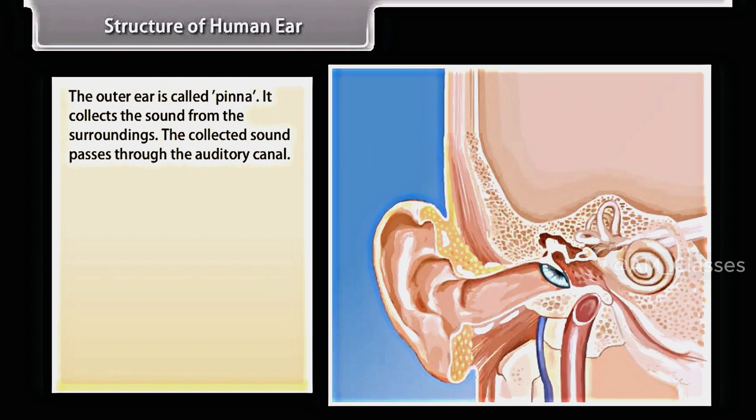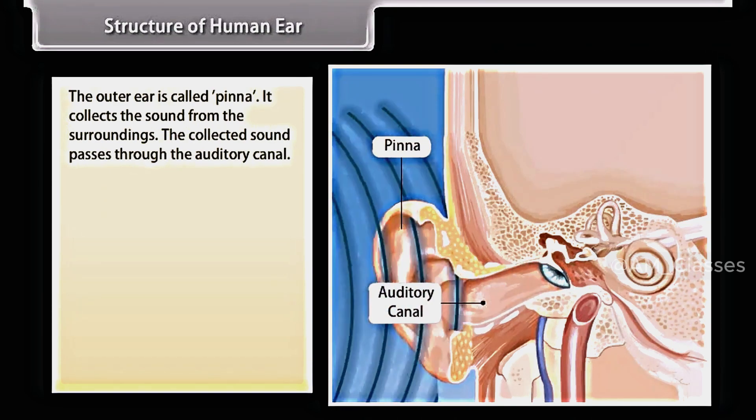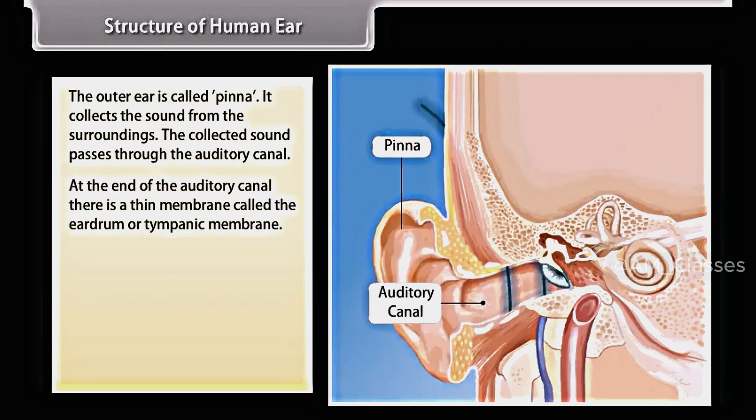The outer ear is called pinna. It collects the sound from the surroundings. The collected sound passes through the auditory canal. At the end of the auditory canal, there is a thin membrane called the eardrum or tympanic membrane.